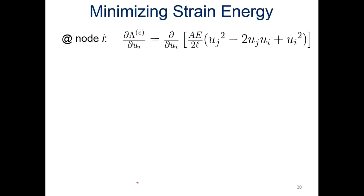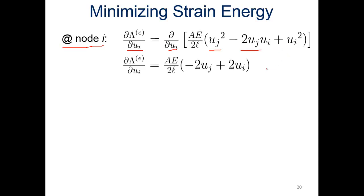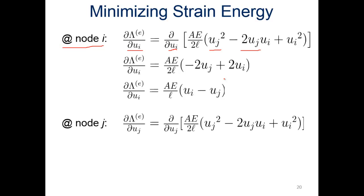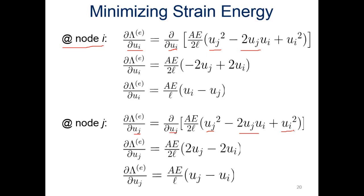Now we minimize the strain energy by taking the differential with respect to displacement at each node. Differentiating with respect to ui at node i, terms involving only uj go to zero, leaving (AE/L)(ui minus uj). Doing the same for node j — differentiating with respect to uj — we get (AE/L)(uj minus ui). Those are our minimized strain energy expressions.